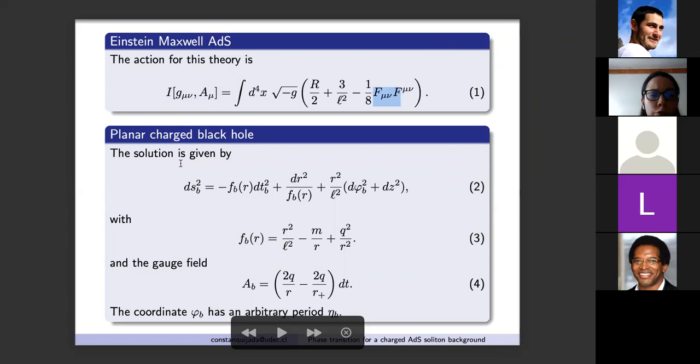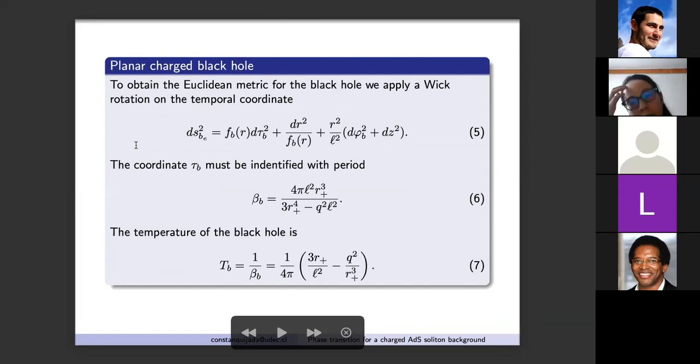A solution for this theory is a planar charged black hole. The line element for this solution is given by equation two with the function f_b defined by equation three where m and q are integration constants. The gauge field is given in equation four where r_+ is the largest root of the equation f_b equal to zero. The coordinate phi_b has an arbitrary period eta_b.